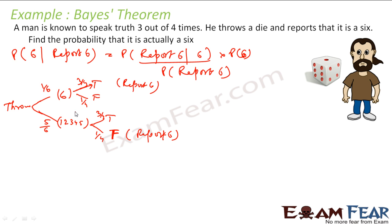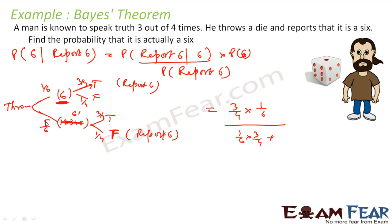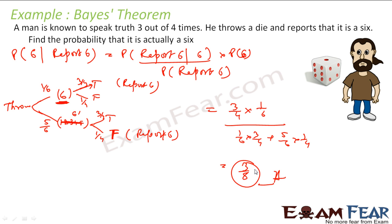This is 6 and this is not 6. If it is not 6 and he is reporting false, that means he is reporting 6. So let us put the values in the theorem. P(report 6 | it is 6) = 3/4, probability of 6 = 1/6. Divided by P(report 6): path 1 is 1/6 × 3/4, path 2 is 5/6 × 1/4. Solving this gives 3/8.